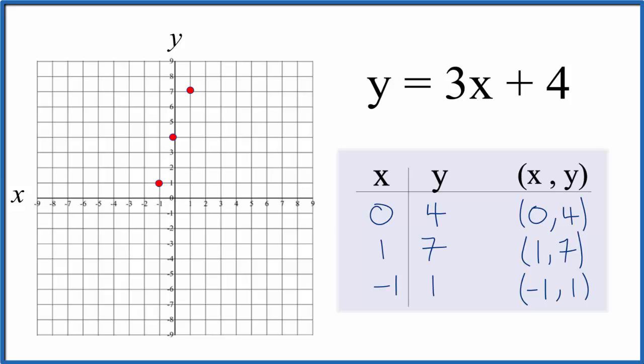And you can see we have this line here. We can just put a line through it, and we can put arrows to show it goes to infinity, and this is the graph for y equals 3x plus 4.